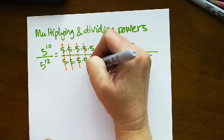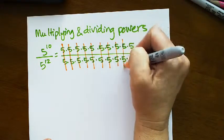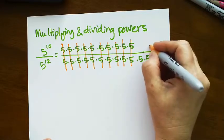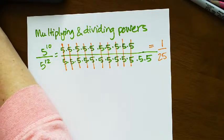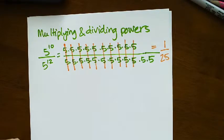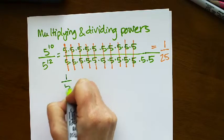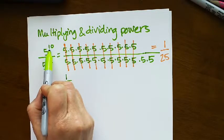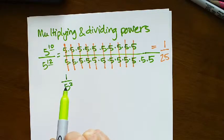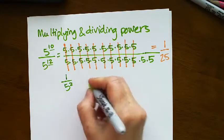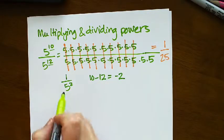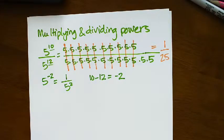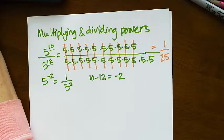5 divided by 5 is 1, so these cancel out, and I'm left with 1 over 5 squared, or 1 over 25. Now, the shortcut is to just subtract the exponents. And if I subtract 10 minus 12, I get negative 2. So this is really 5 to the negative 2 power, which is 1 over 5 squared.